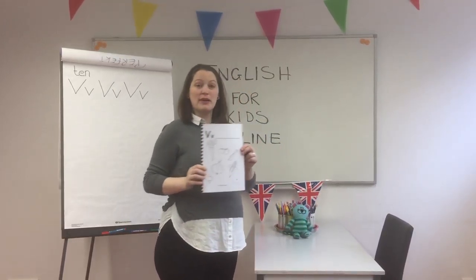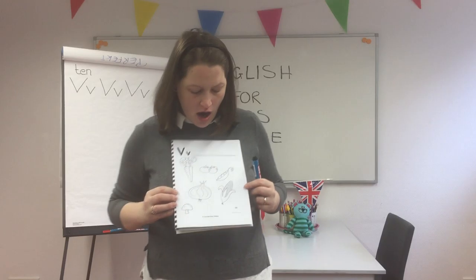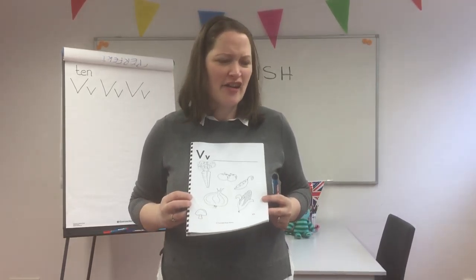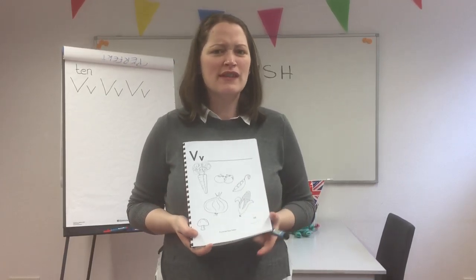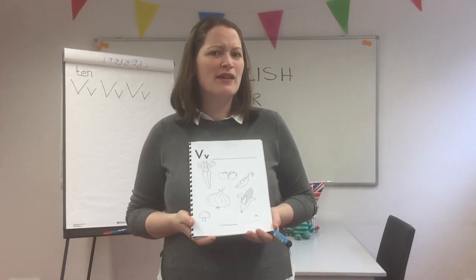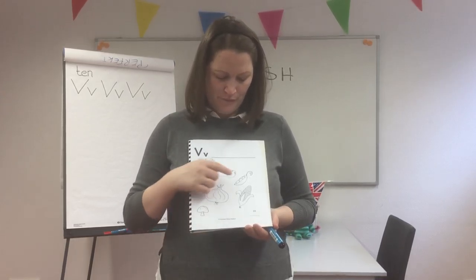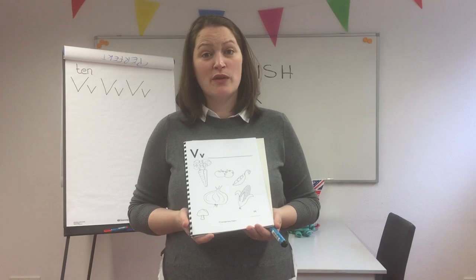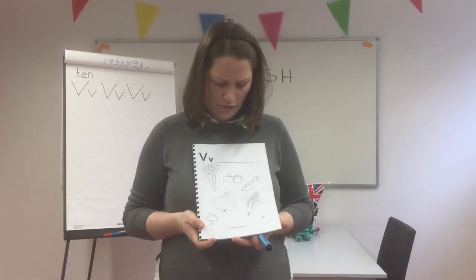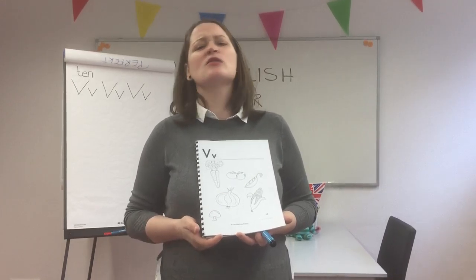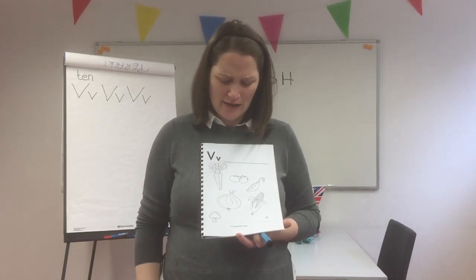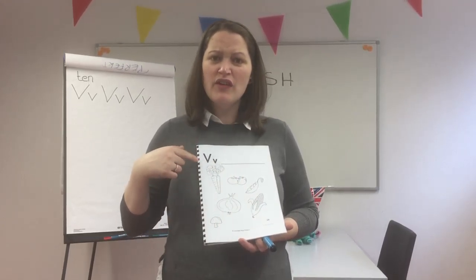Now, what pictures can you see? Are these words that start with V? Carrots? That's with C. Tomatoes? That's with T. Peas? That's with P. Onion? That's with O. Mushroom? That's with M. And corn? That's with C. None of these start with V.